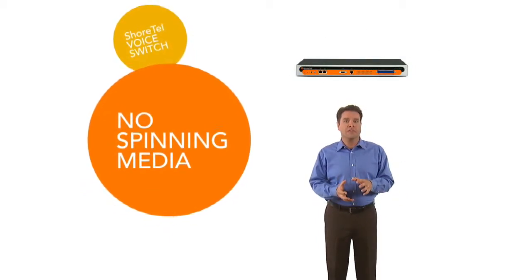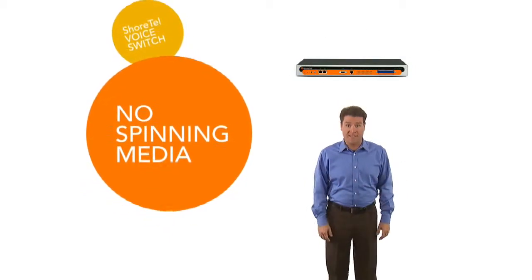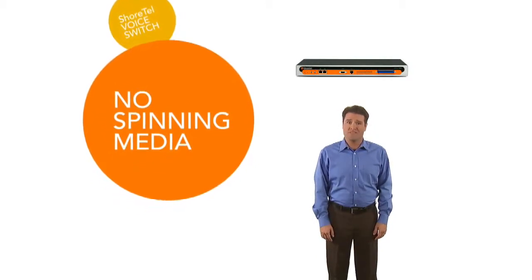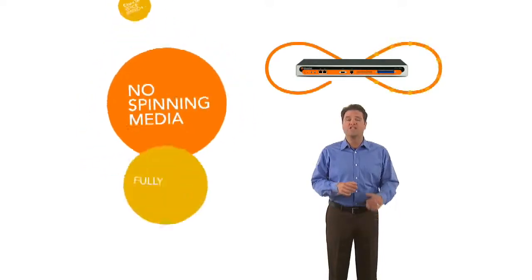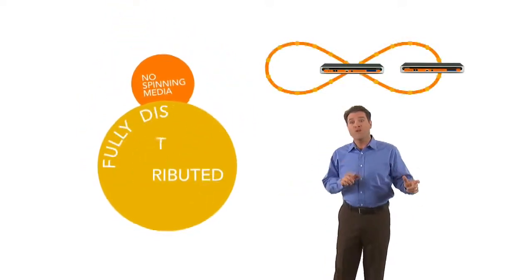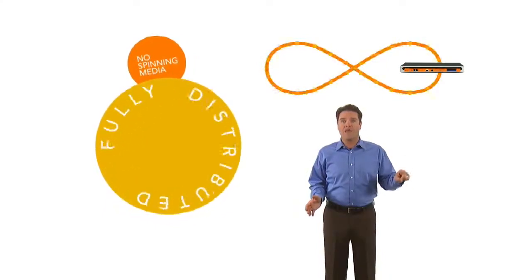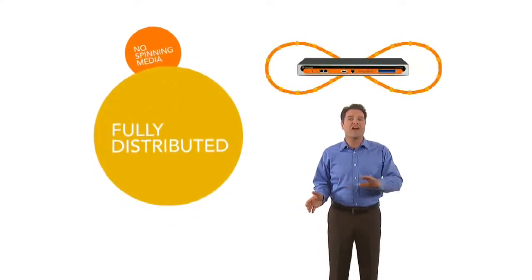A centralized system can seem pretty sweet. That is, until your call processing server blows out, then not so much. But a Shortel system is fully distributed, so those voice switches can work independently. If a part of the network goes out, that local switch provides services like nothing happened.